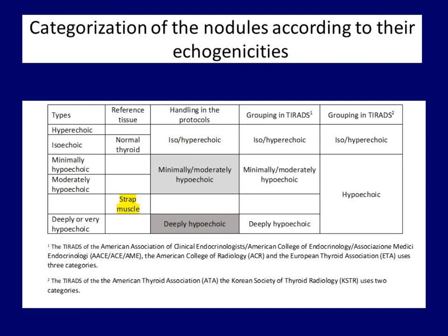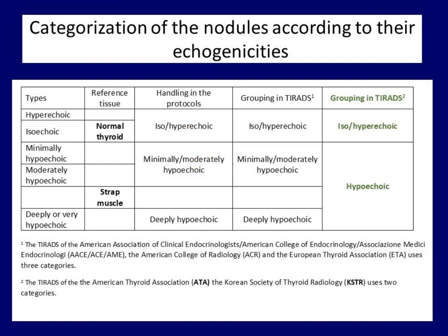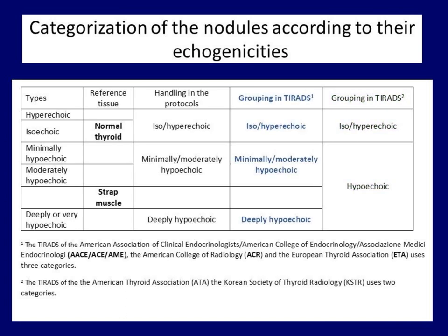Theoretically it seems a simple task to determine the echogenicity of a nodule. Though traditionally we distinguish five different kinds of nodules according to their echogenicity, all guidelines speak of only three different types because hyperechoic and iso-echoic nodules are treated in the same way, as are minimally and moderately hypoechoic lesions. Although all guidelines suggest differentiating non-deeply and deeply hypoechoic nodules, regarding the scoring systems they differ. Two of them, the ACR and Korean-TIRADS, handle all hypoechoic nodules in the same way while the other systems do not.